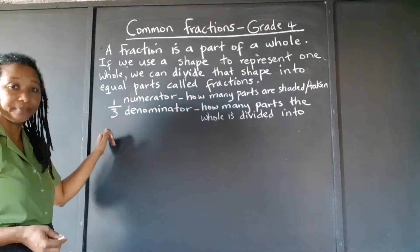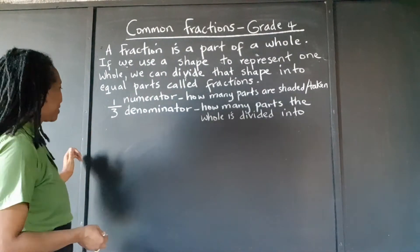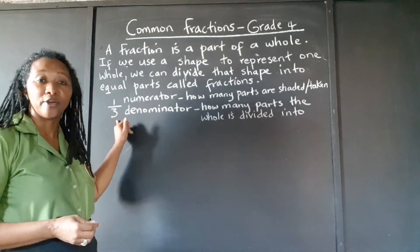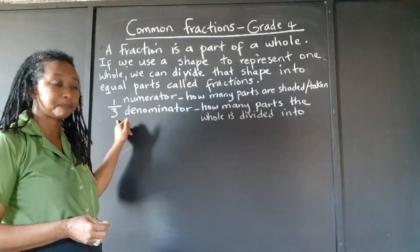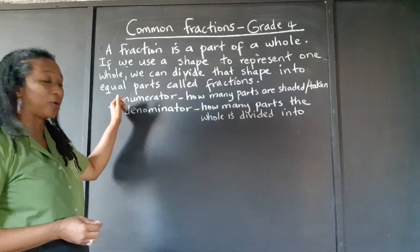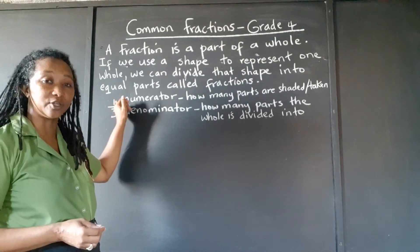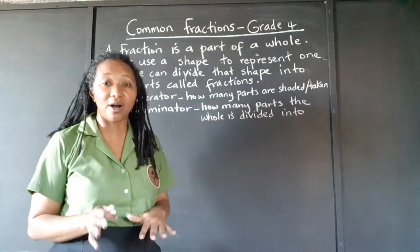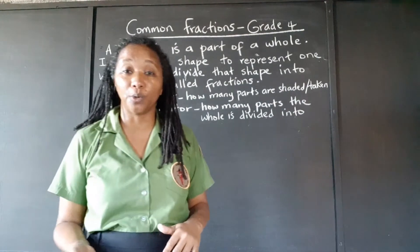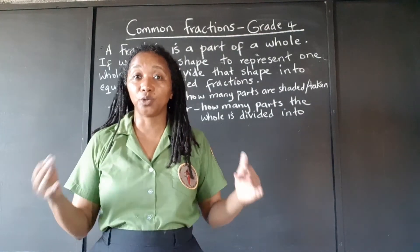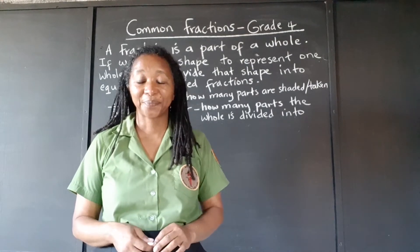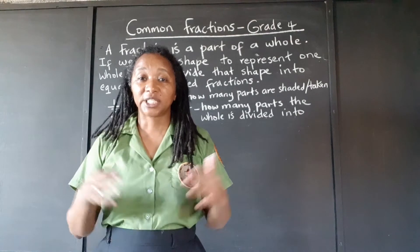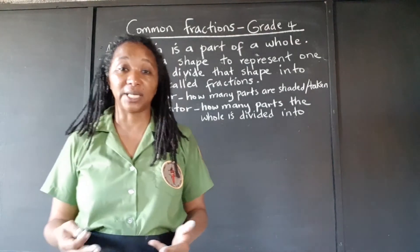One-third tells us that we have a whole thing, we're cutting it into three equal parts, and we're going to shade one part or remove one part. Now I'm going to write some very common fractions that you should know the names of — you should know these ones by heart.